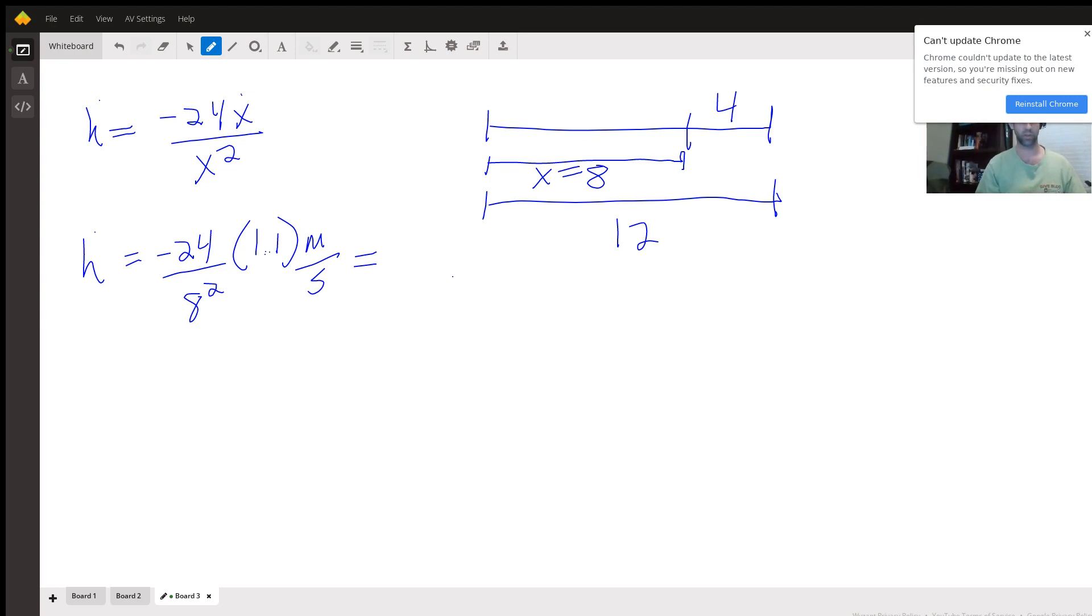Let me redo that one, it's not the correct answer. 24 divided by 64 times 1.1, there we go, here's the correct answer: 0.4125 meters per second.